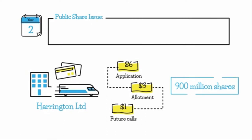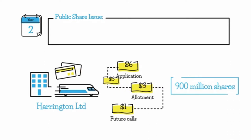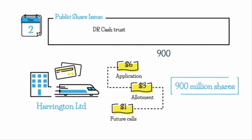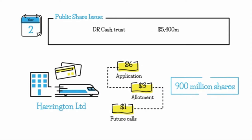The first journal entry collects all monies received from the public into the cash trust account. This is an asset account held in trust by the solicitors of the company. So we debit cash trust $5,400 million and credit application $5,400 million.